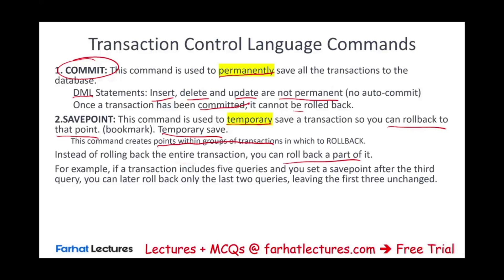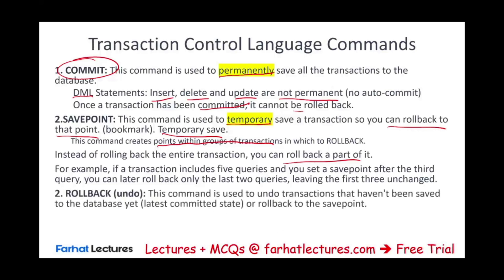For example, if a transaction includes five queries and you set a savepoint after the third, you are good up to that point. If something goes wrong with queries four or five, you can roll back to that savepoint, leaving the first three unchanged. The rollback command is used to undo a transaction that has not yet been saved to the database — it rolls back to the latest committed state or to the savepoint, as we just discussed.